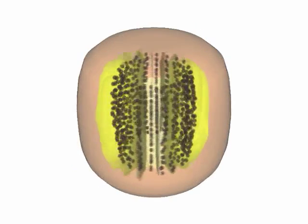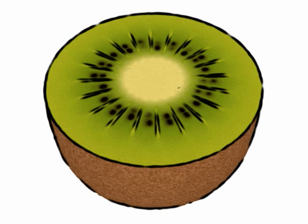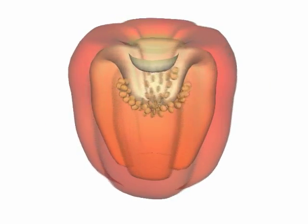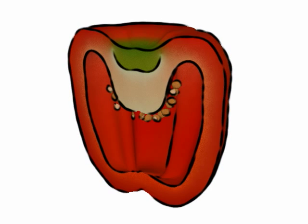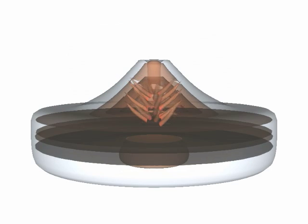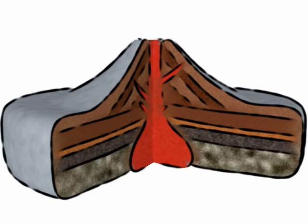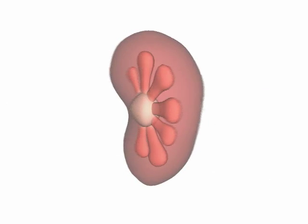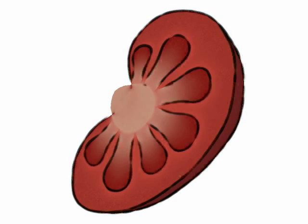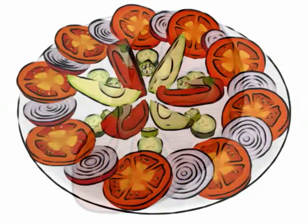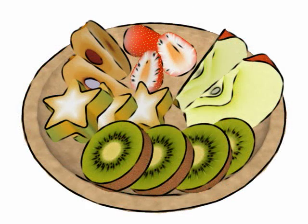The diffusion surfaces representation can be used for a variety of volumetric structures, such as fruit, vegetables, geological models, and anatomical models. Here are scenes consisting of many cut pieces of objects, where our algorithm for synthesizing random variations of models is very effective.